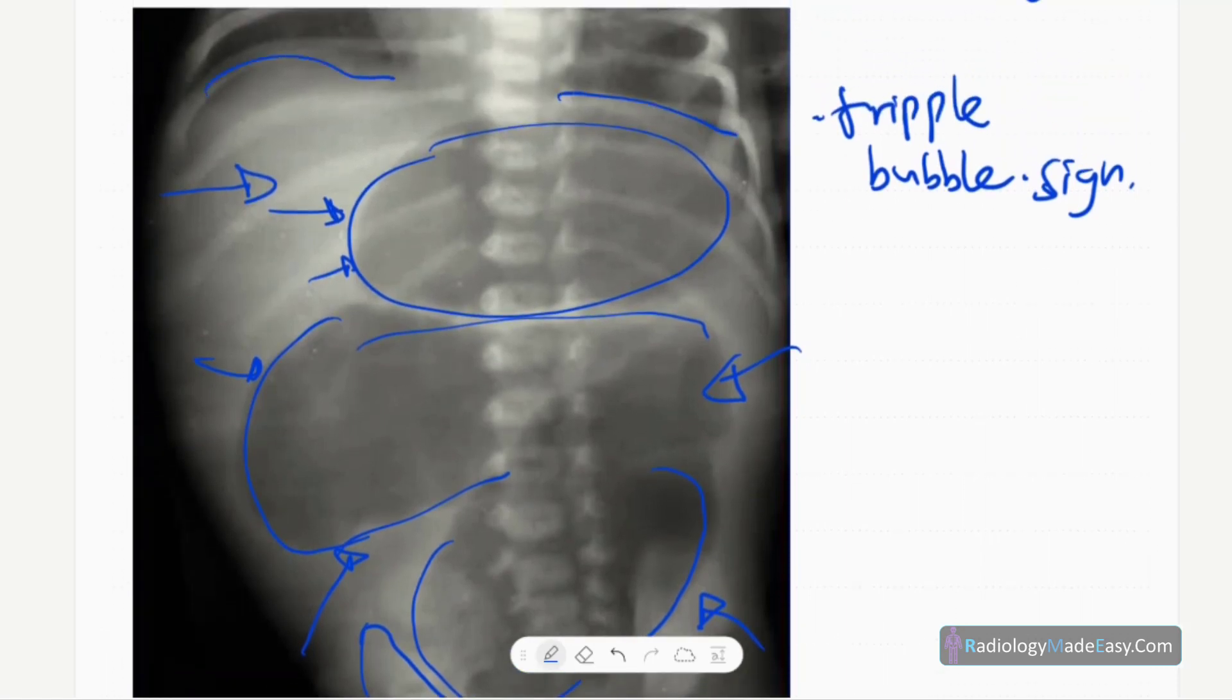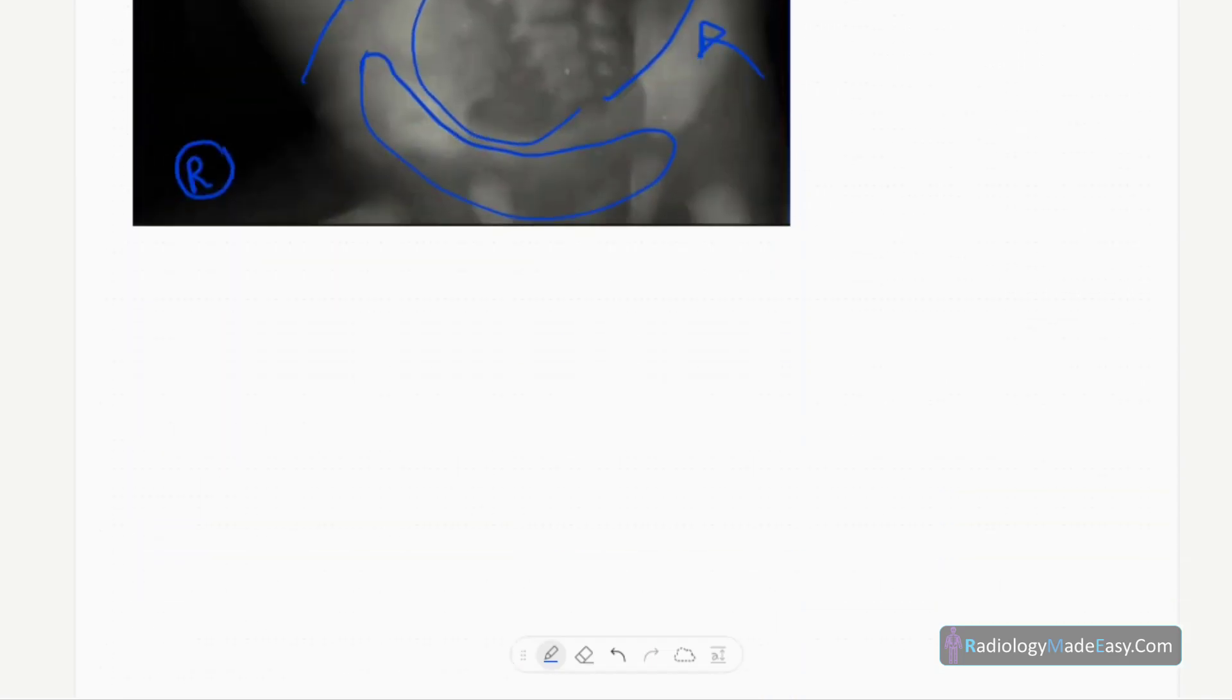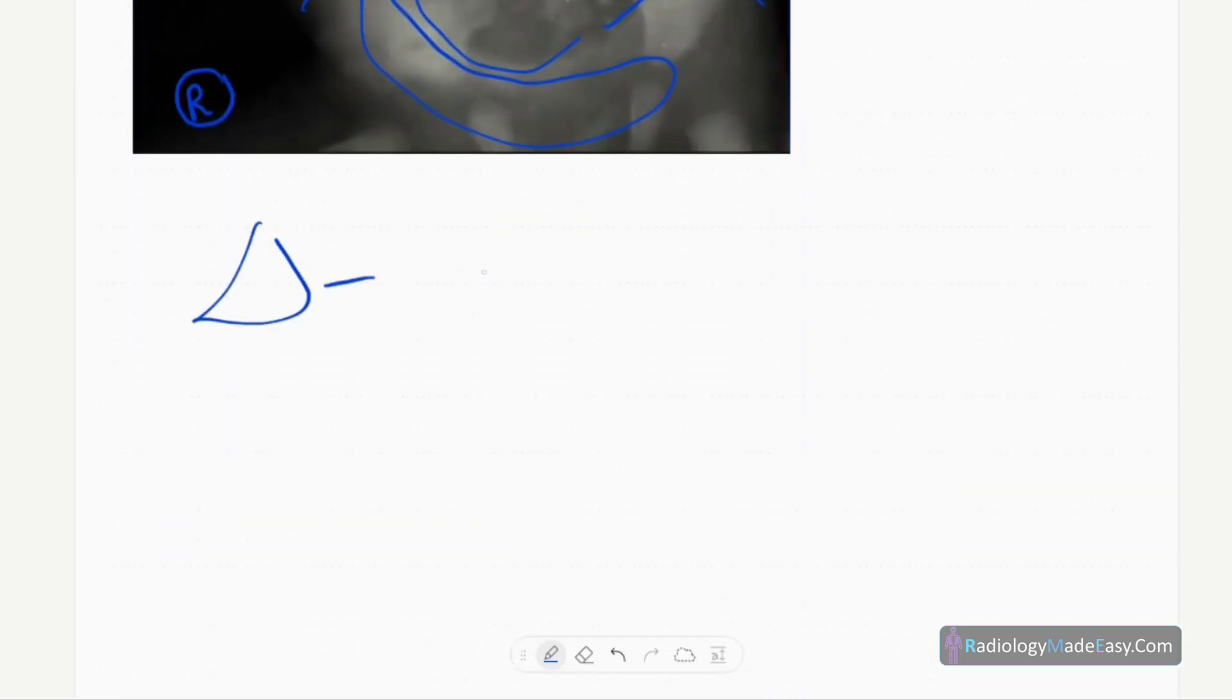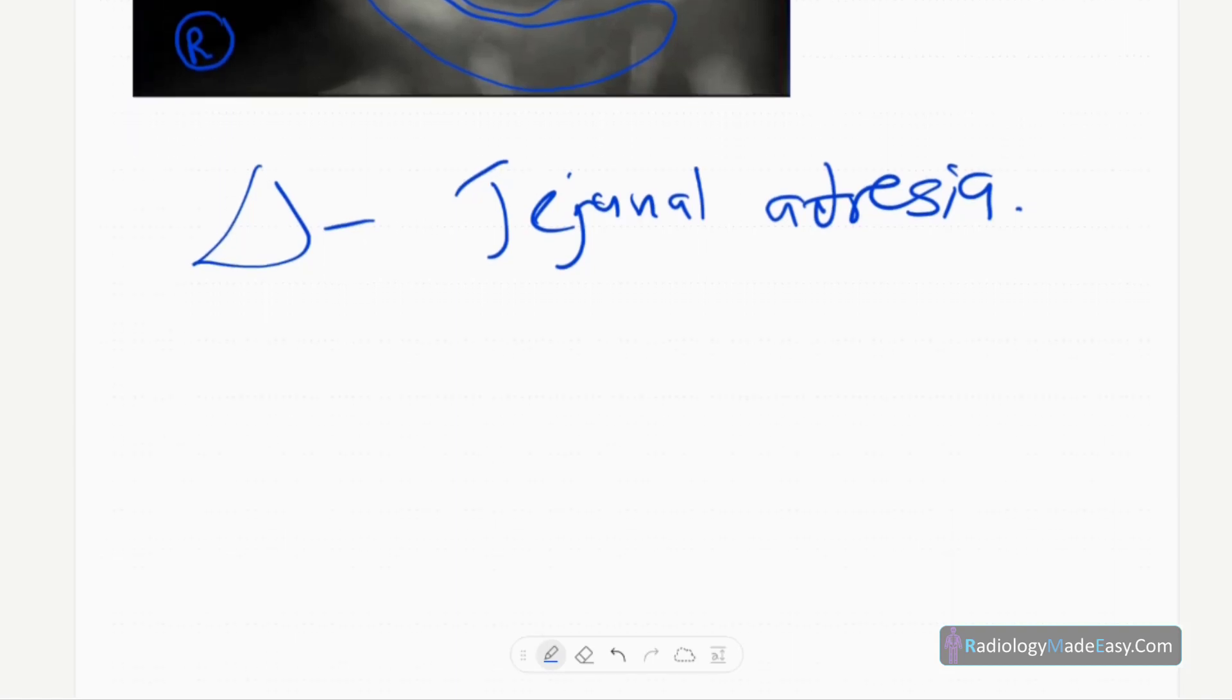No diaphragmatic hernia. In this case, our diagnosis is jejunal atresia. Jejunal atresia means luminal obstruction of the jejunum, which is a congenital abnormality - failure to recanalize the proximal jejunum. Other differential diagnoses are